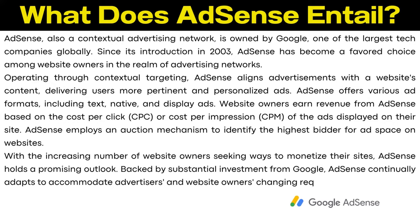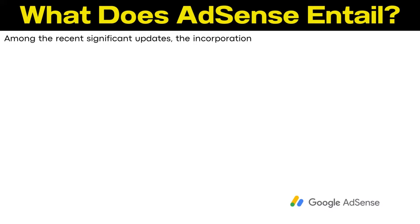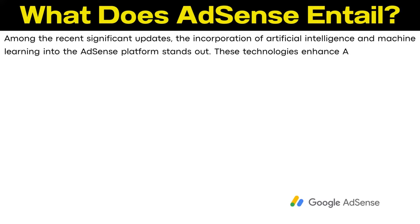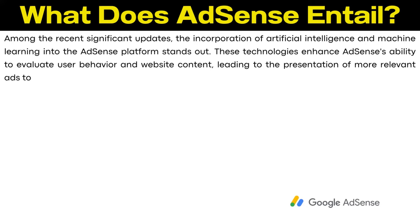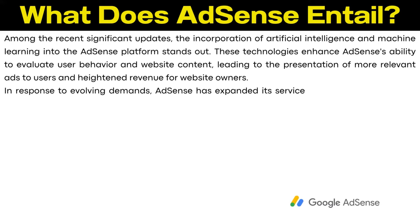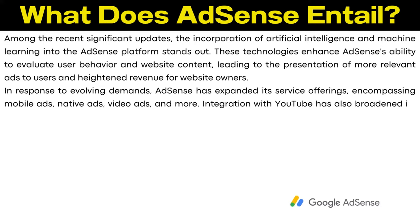Among the recent significant updates, the incorporation of artificial intelligence and machine learning into the AdSense platform stands out. These technologies enhance AdSense's ability to evaluate user behavior and website content, leading to the presentation of more relevant ads to users and heightened revenue for website owners. In response to evolving demands, AdSense has expanded its service offerings encompassing mobile ads, native ads, video ads, and more. Integration with YouTube has also broadened its spectrum of advertising choices for website owners.